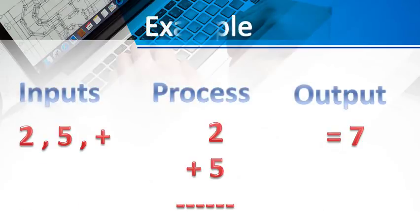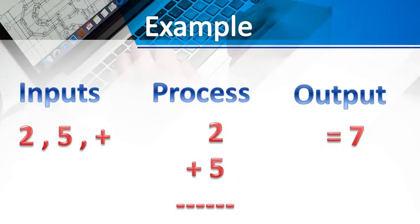Let us understand the working of a computer with an example. Let us take inputs 2 and 5, and plus. Plus is an instruction, and it is also known as input. Processing: we will add 2 and 5, so we write 2 plus 5. And the output will be the addition of those two numbers — that is 7.